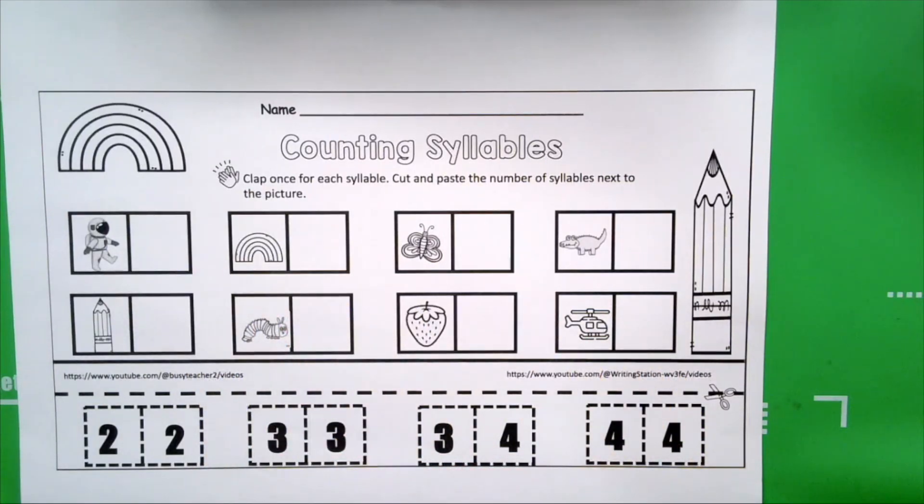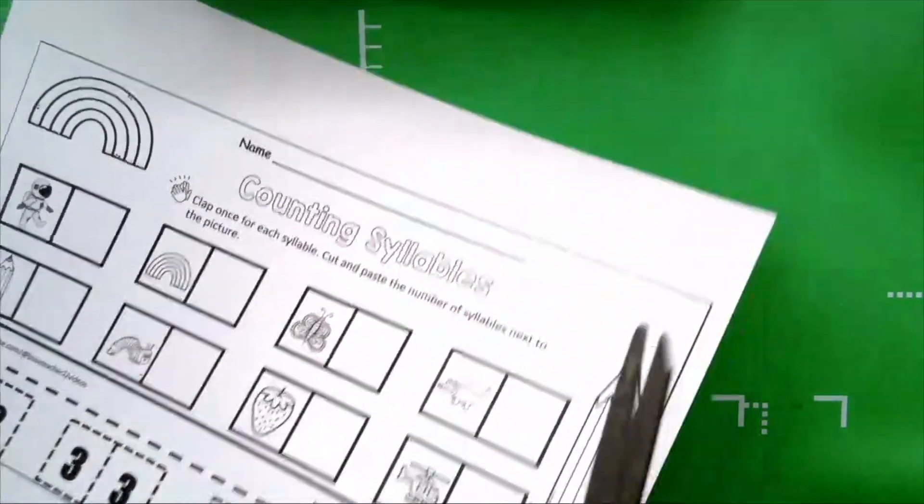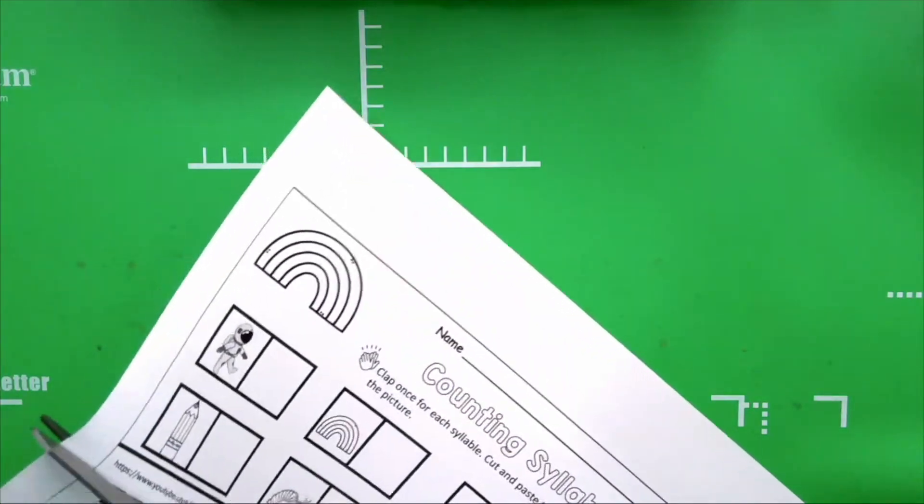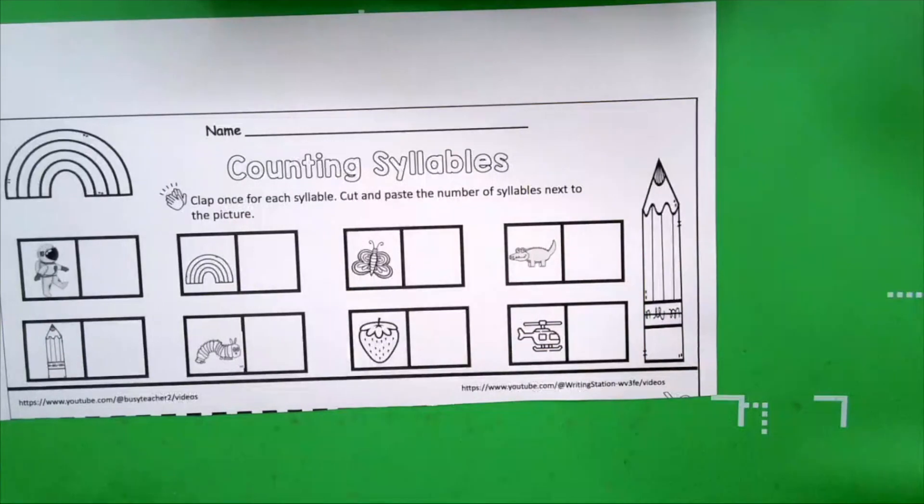The first thing we're going to do, we're going to cut out our numbers. There are eight pictures and eight number cutouts.